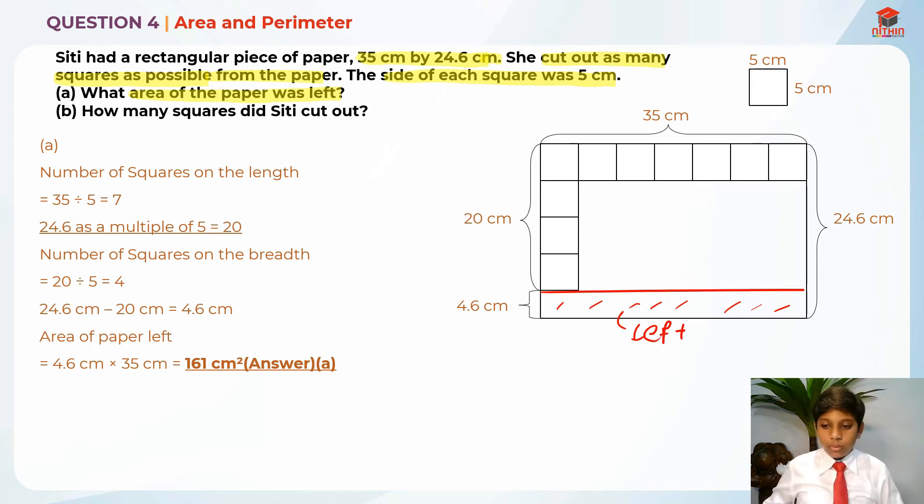So this is why we're taking 4.6 cm, which is this area times the length over here, which is still 35 cm. So this is what I did. So the answer for part A is actually 161 cm squared. I hope you understand this.